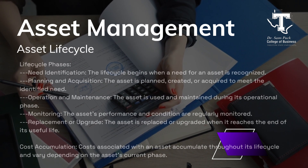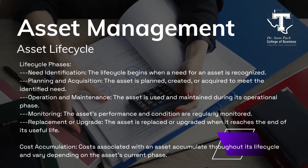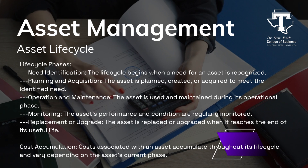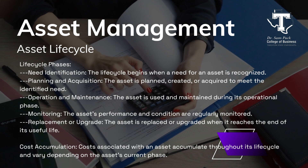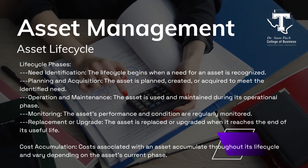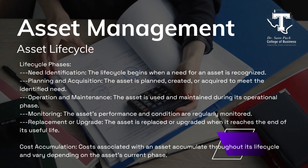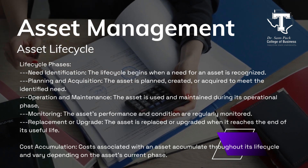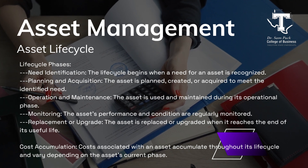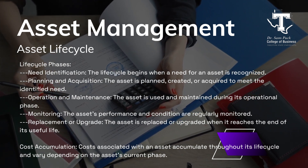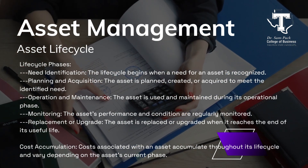Every asset has a lifecycle that kicks off as soon as a need for it is identified. From there, the asset goes through several stages: it's planned, created or acquired, then operated and maintained. Throughout its life, it's monitored for performance, and eventually it gets replaced or upgraded when it's no longer viable. The costs associated with an asset can add up at different stages, so it's crucial to manage these expenses throughout its lifecycle.